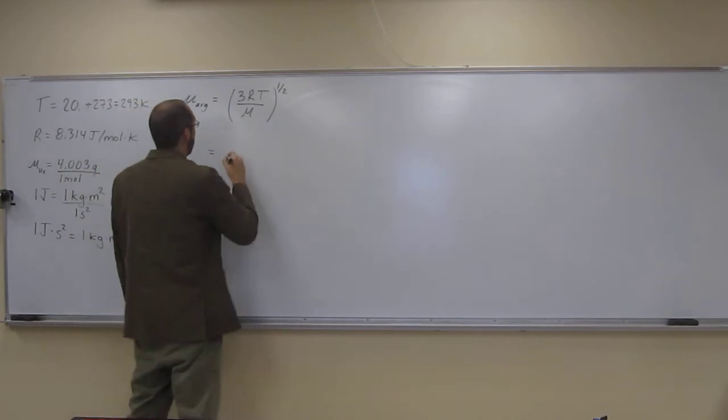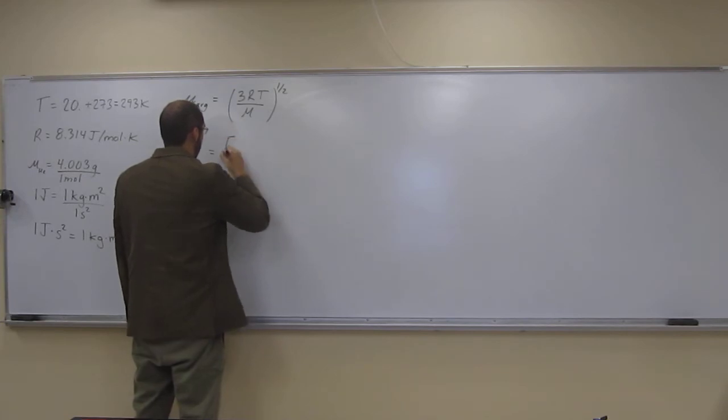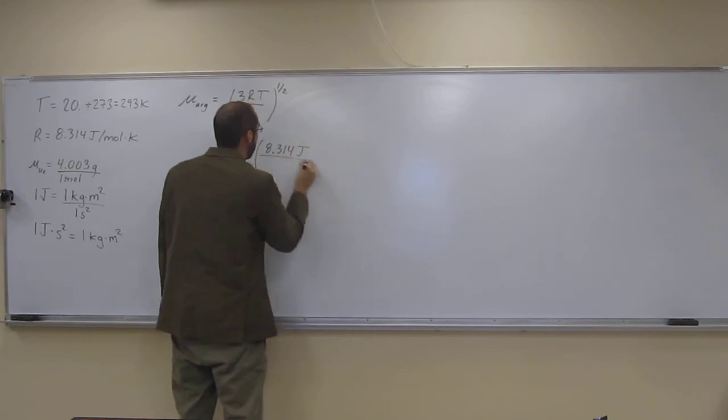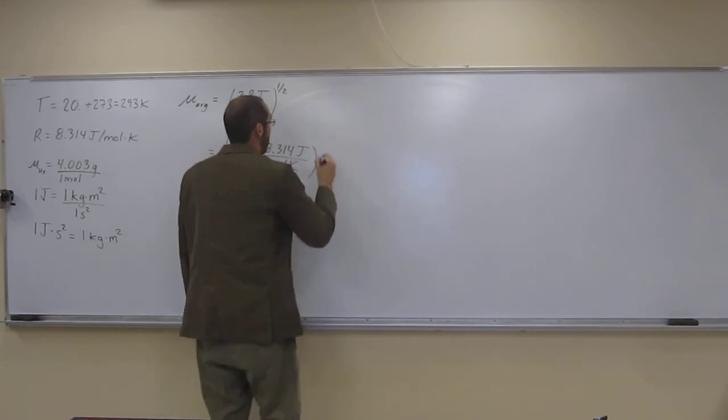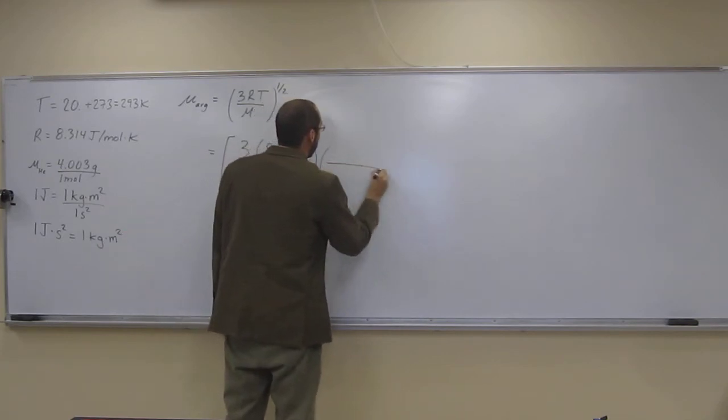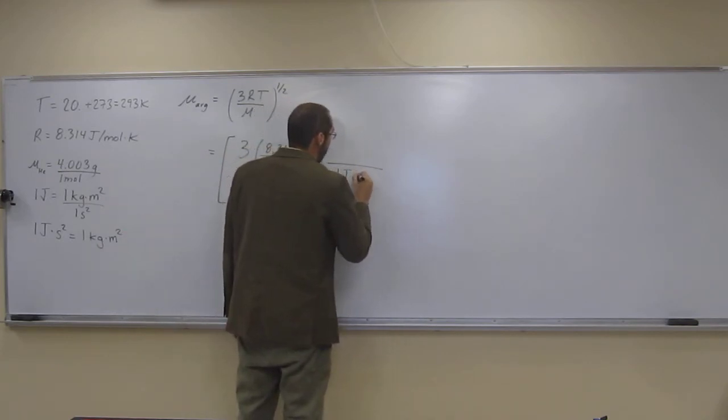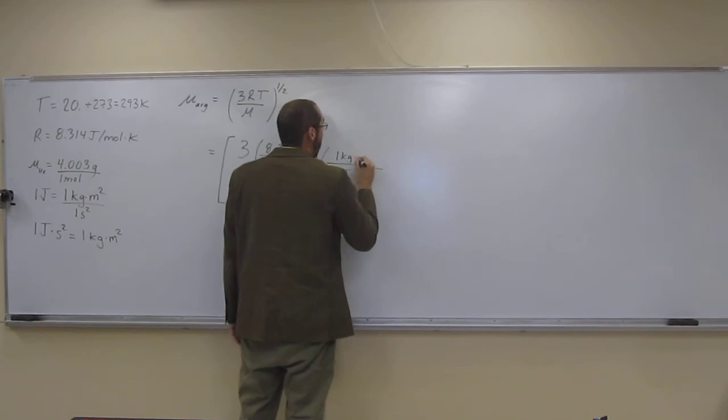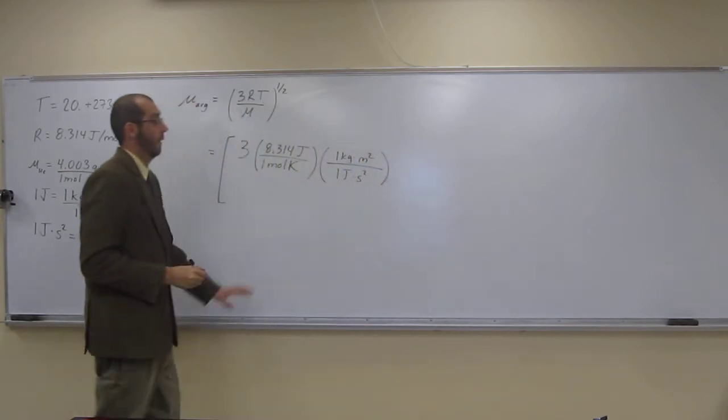So here we've got 3, so R, 8.314 joules per 1 mole kelvin. And then what do we say, well, we've got to convert. So we want joules on the bottom, so 1 joule second squared, 1 kilogram meter squared, like that.